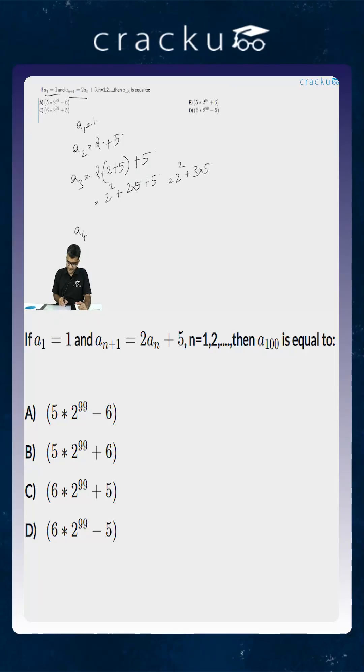Next, A₄ will be equal to 2 times (2² + 3×5) plus 5. This is equal to 2³ plus 2×3×5 plus 5, which is 2³ plus 7×5.